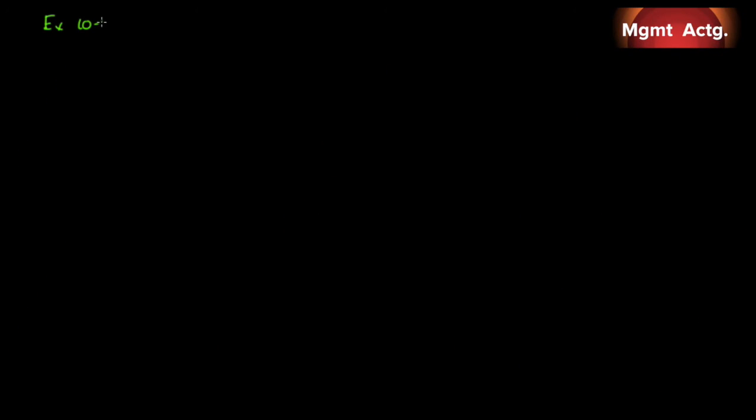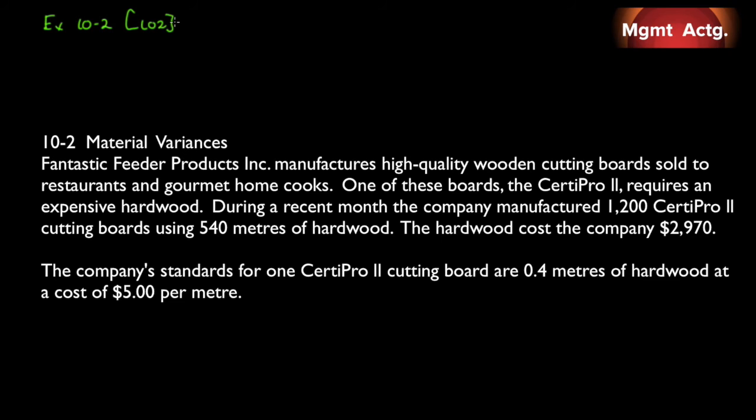Exercise 10.2 for learning objective number two. Let's see what we have. Material variances. Fantastic Feeder Products manufactures high-quality wooden cutting boards sold to restaurants and gourmet home cooks. One of these boards, the Certi Pro 2, requires an expense of hardwood. During a recent month, the company manufactured 1,200 Certi Pro 2 cutting boards using 540 meters of hardwood. The hardwood costs the company $2,970. The company standards for one Certi Pro 2 cutting board are 0.4 meters of hardwood at a cost of $5 per meter.